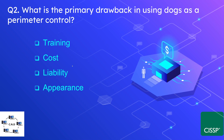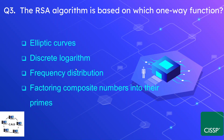Question number two: what is the primary drawback in using dogs as a perimeter control? The options are training cost, liability, and appearance. The correct answer is liability. The drawback is that the dog may accidentally attack a person who has entered the controlled area by mistake, making the dog a liability.